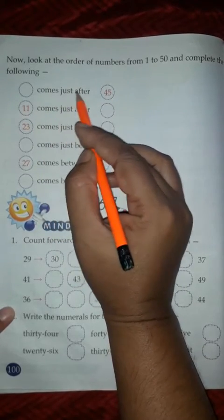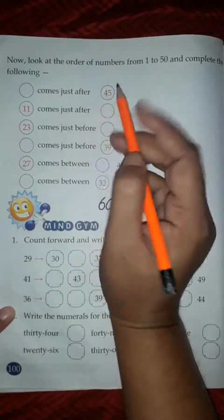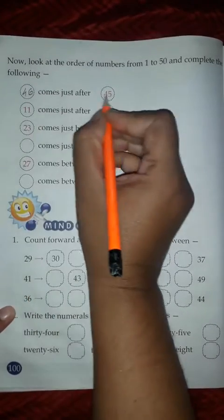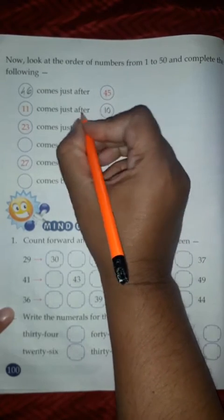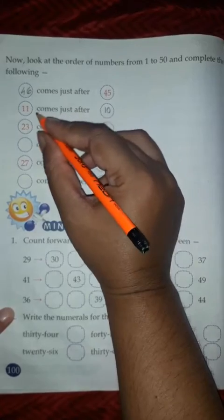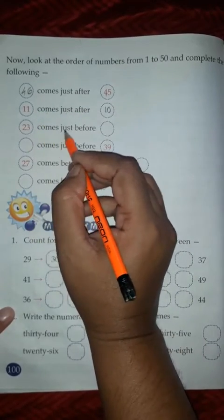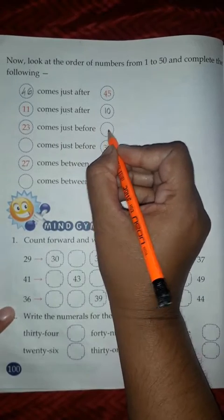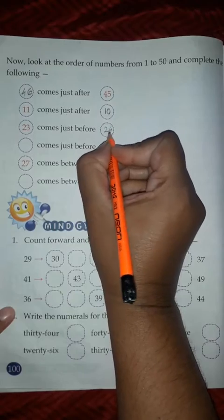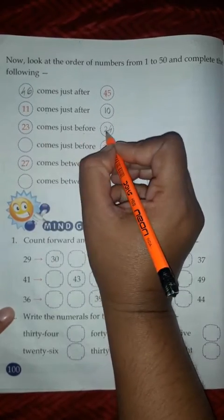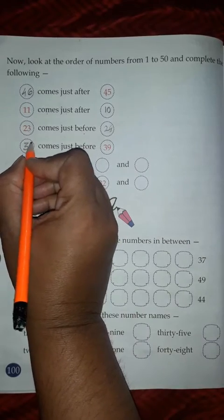Blank comes just after 45. 45 after comes 46. Next, 11 comes just after 10. 10 after just comes 11. 23 after. 29 after. 39 after, 38.